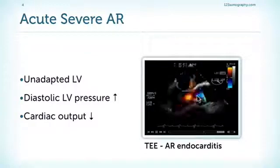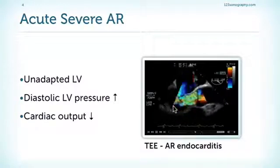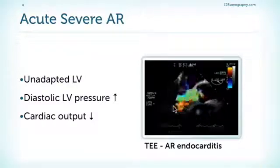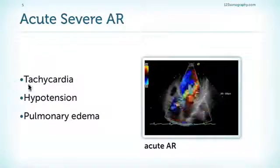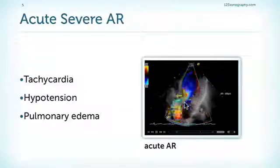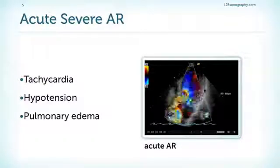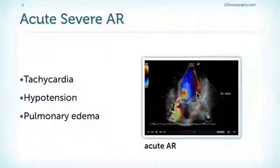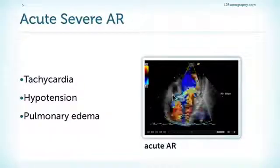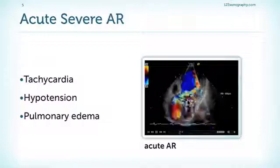We can see a very broad jet, and we also see that the patient has a fairly small ventricle. These patients usually also have a high heart rate — tachycardia — simply because they have to sustain cardiac output. And this makes it sometimes difficult to quantify aortic regurgitation. They have hypotension simply because they are in cardiogenic shock.